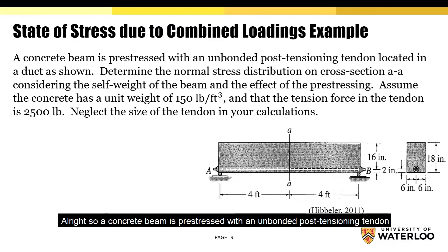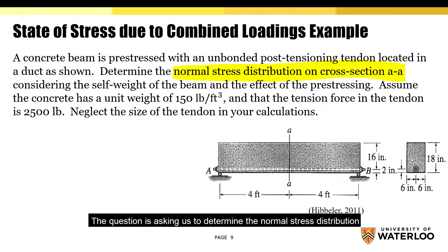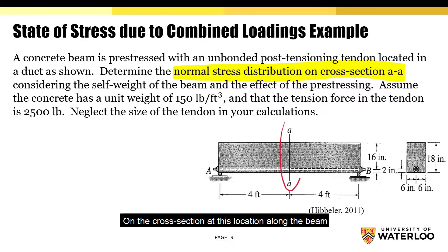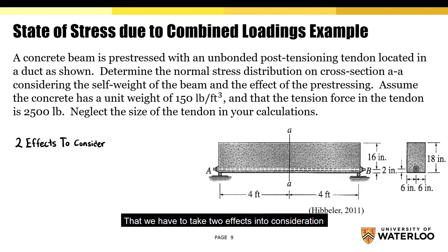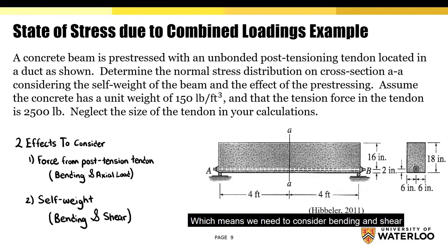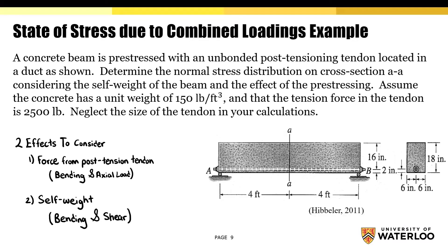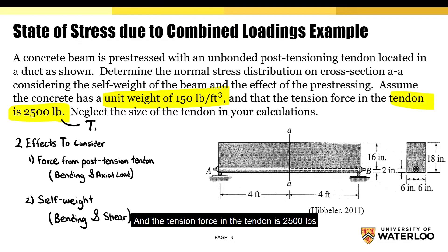A concrete beam is pre-stressed with an unbonded post-tensioning tendon, which is this rod here. The question asks us to determine the normal stress distribution on the cross-section at this location along the beam. We have to take two effects into consideration: the first is the force produced by the post-tension tendon — bending and axial loads — and the second is the self-weight of the concrete, which means we have to consider bending and shear. The unit weight of the concrete is 150 pounds per cubic foot and the tension force in the tendon is 2500 pounds.